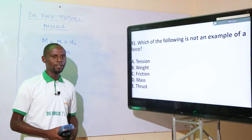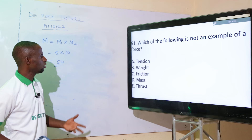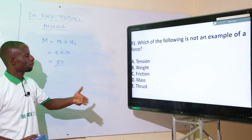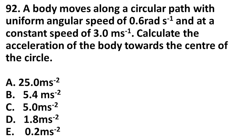Which of the following is not an example of a force? Force is a vector quantity. Option A: tension — is a force. Option B: weight — is a force. Option C: friction — is a force. Option D: mass — is not a force; it is a scalar quantity. Option E: thrust — is a force. The correct option is option D: mass.